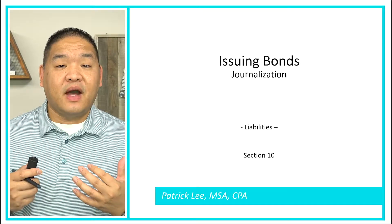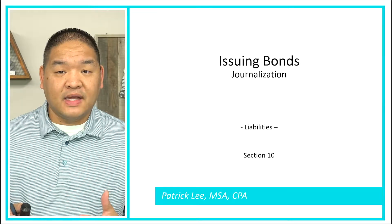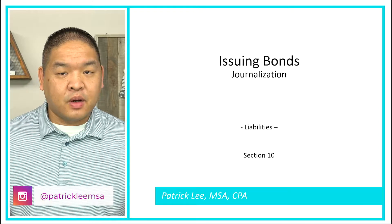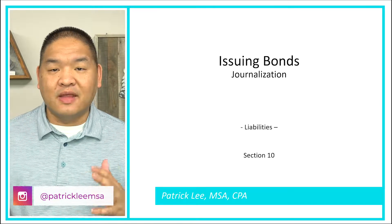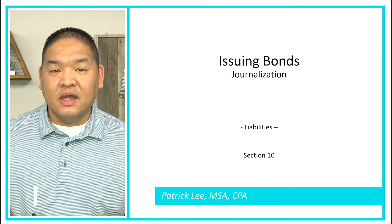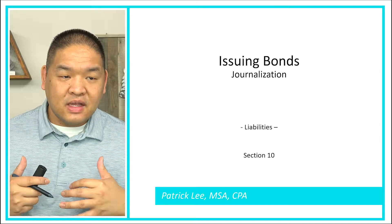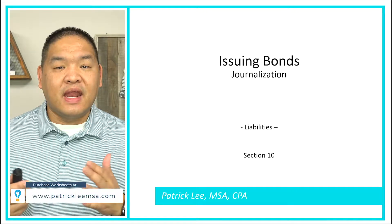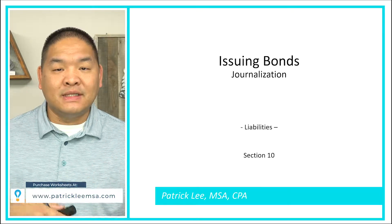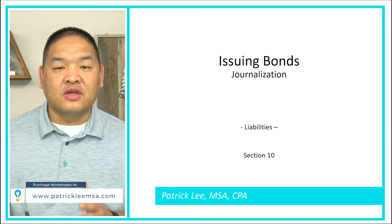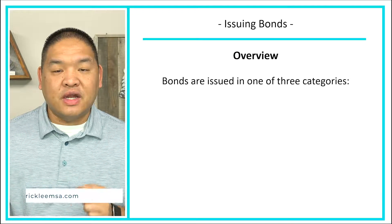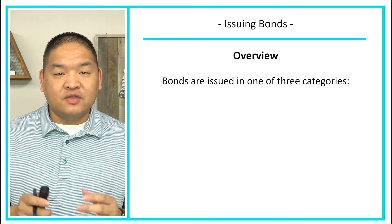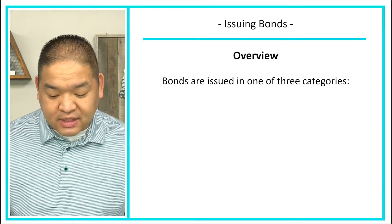In this lesson, we're going to be talking about issuing bonds. We're going to look at the journal entry for all three of the bond pricing methods that we talked about in the last lesson. And then I'll give you a little bit more information on why bonds are issued at a premium, a discount, or face value. So let's get started with the overview of journalization and issuing bonds.